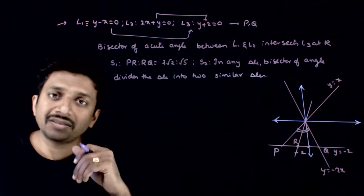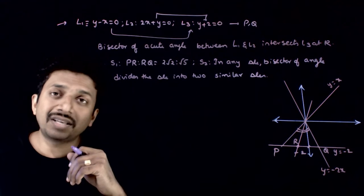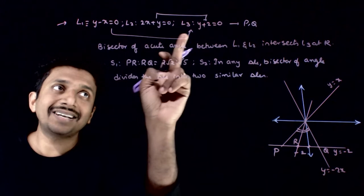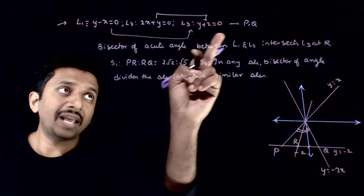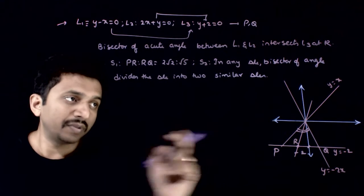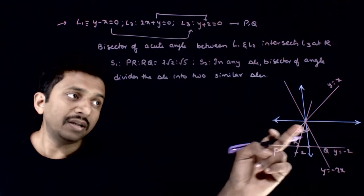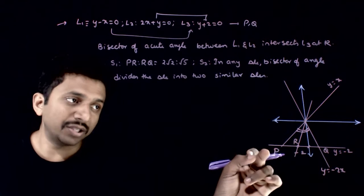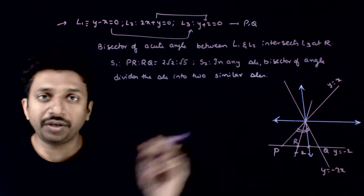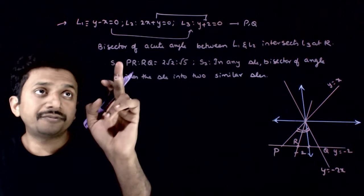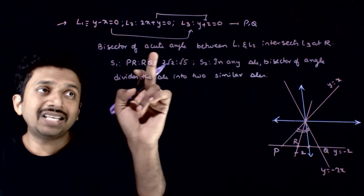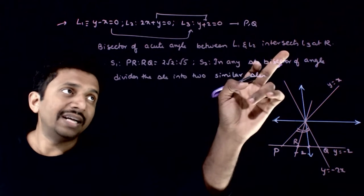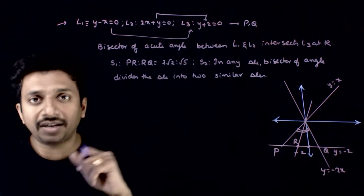L1 and L2 intersect L3 at two points P and Q. That is, L1 and L2 intersect the line y = -2 at points P and Q. The bisector of the acute angle between L1 and L2 intersects L3 at R.